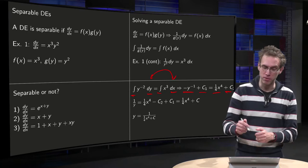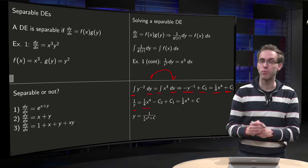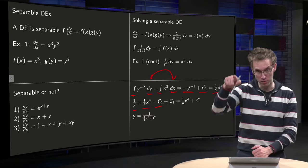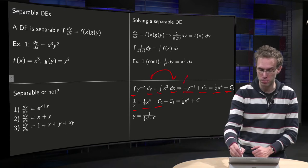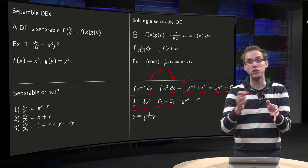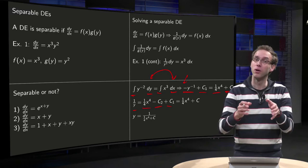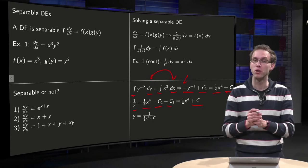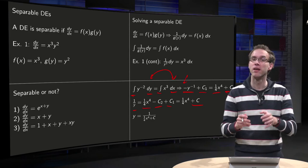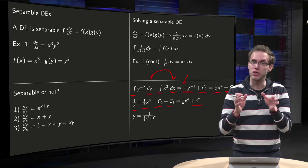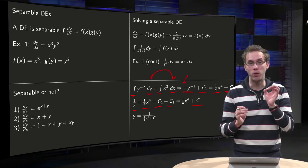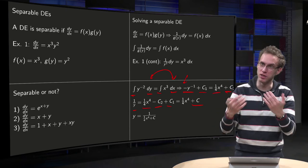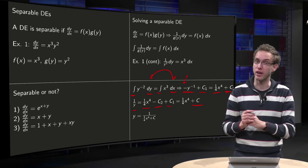Now we clean up. We get −1/y = (1/4)x⁴, and moving the constants: −c₂ and +c₁ can be combined. The sum of two arbitrary constants is also an arbitrary constant, so we can put them together into one constant c. This gives us 1/y = (1/4)x⁴ + c. You can always do this trick with first-order equations — with only one derivative you only need one constant, so you can always combine the two integration constants into one.